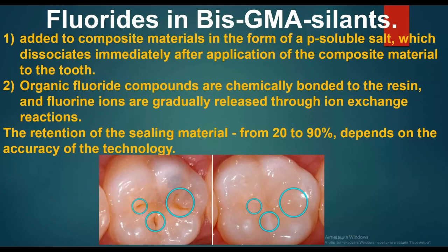Fluoride in bis-GMA sealants: two composite materials in the form of a soluble salt dissociate immediately after application of the composite material to the tooth. Organic fluoride compounds are chemically bonded to the resin, and fluorine ions are gradually released through ion exchange reactions.